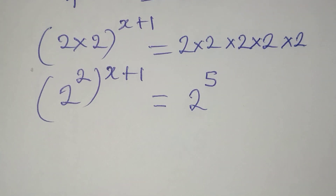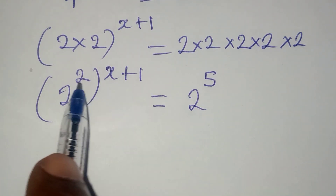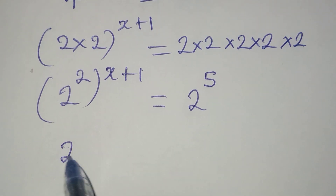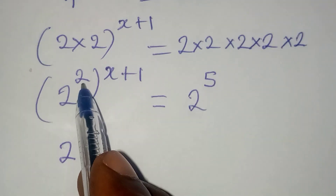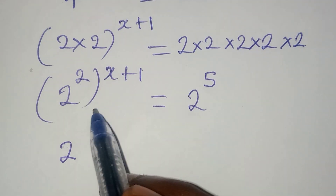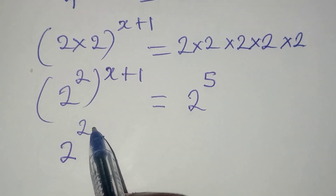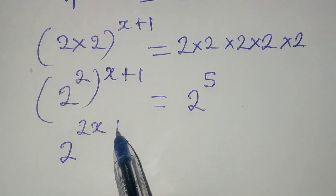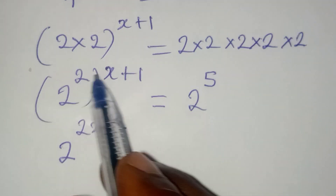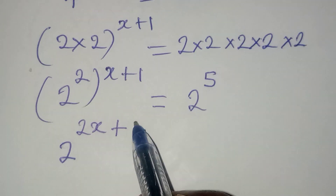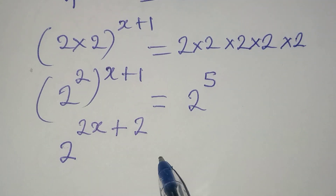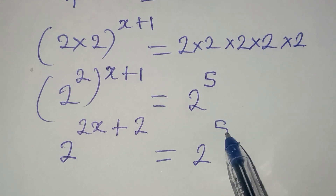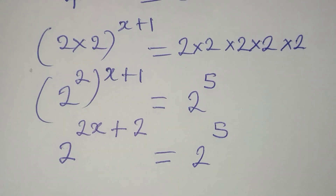Now we can multiply the powers. So it's going to be 2 to the power of 2 times x, that will be 2x, then plus 2 times 1, that will give 2, and it is equal to 2 to the power of 5.